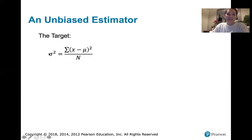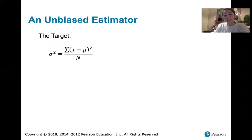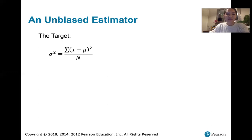The target is the population variance, denoted by sigma squared. You take each x value in your population, subtract the population mean to get a deviation from the mean for each x value. Some of those will be positive and some negative, so you square them so all deviations count as positive. Then you add them together and divide by the size of the population to get the population variance.